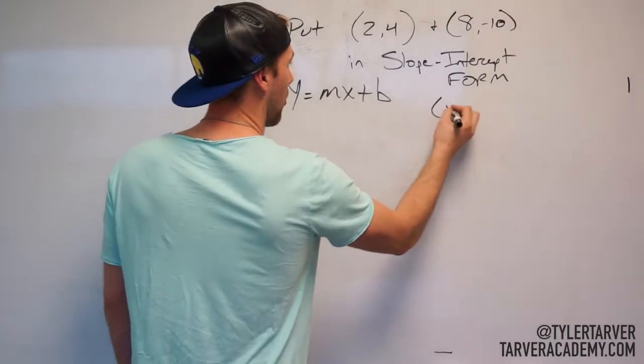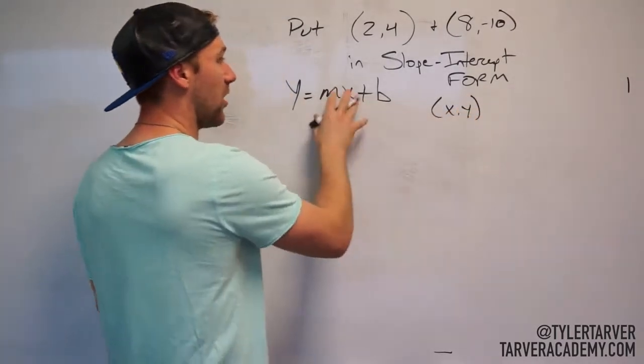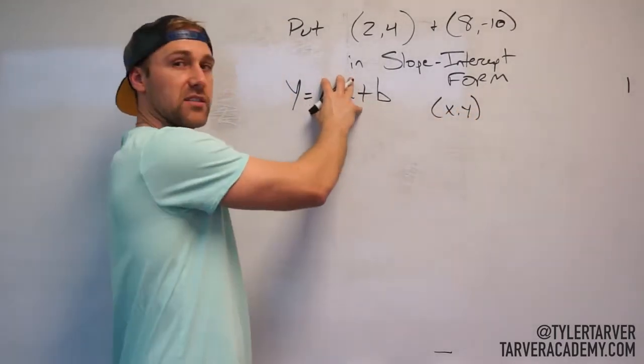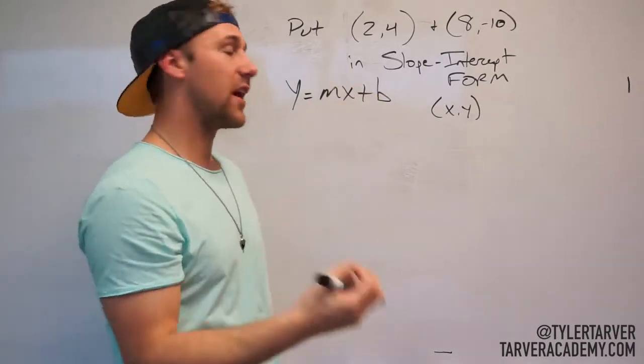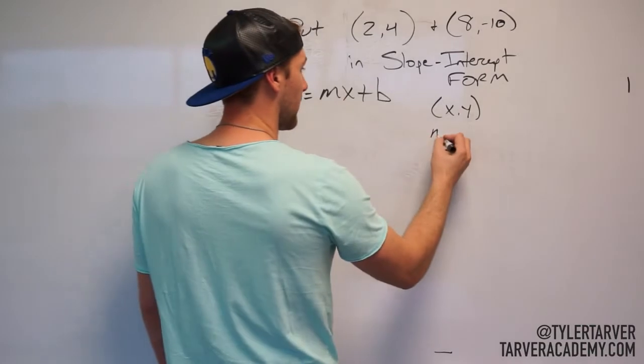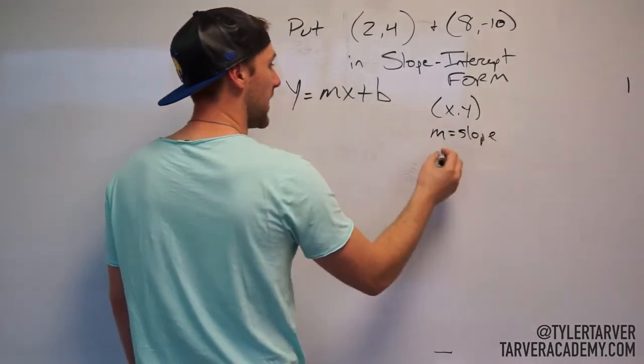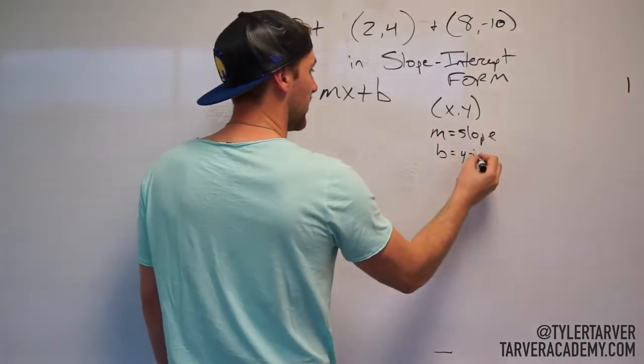X and y are your coordinate, okay? They can be any coordinate on this line because this represents the equation of a line and so x and y would be any coordinate on that line. m is your slope and b is your y-intercept, okay?